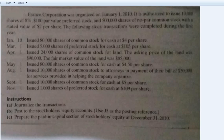The following stock transactions were completed during the first year. January 1st: issued 80,000 shares of common stock for cash at $4 per share. You know in this one we have a stated value of $2 per share, so any issue of common or preferred stock should be at the stated value or par value.